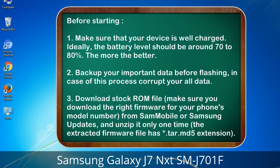Before starting: 1. Make sure that your device is well charged. Ideally the battery level should be around 70 to 80% — the more the better. 2. Back up your important data before flashing, in case this process corrupts all your data. 3. Download the stock ROM file. Make sure you download the right firmware for your phone's model number.